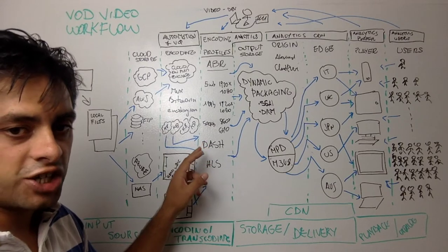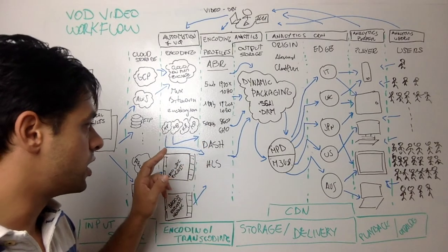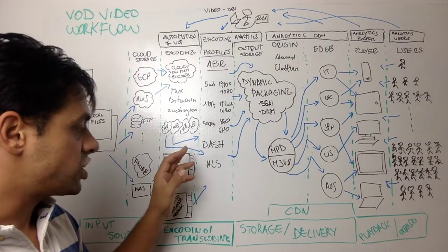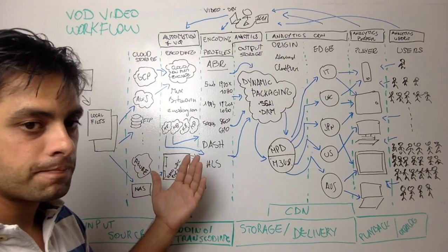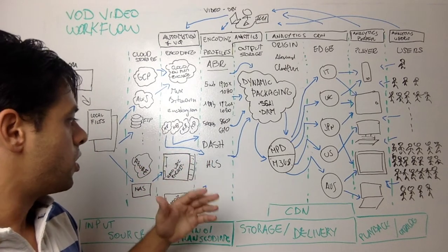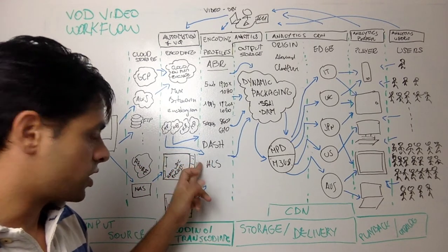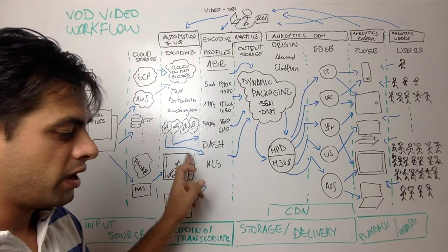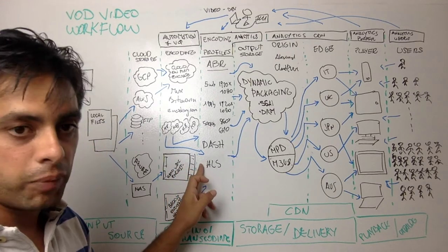We create different copies at different resolutions and with different protocols. We have Dash and HLS as examples. Dash works on Android devices and on the web, whereas HLS works on the web and Android devices, but also on Apple devices.